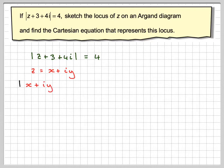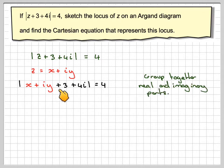So if we replace z with x plus iy, we still have plus 3 plus 4i is equal to 4. The next step is to group together the real and the imaginary parts. So the real bit is going to be x plus 3. The imaginary part will be y plus 4 times i, and that will still be equal to 4.